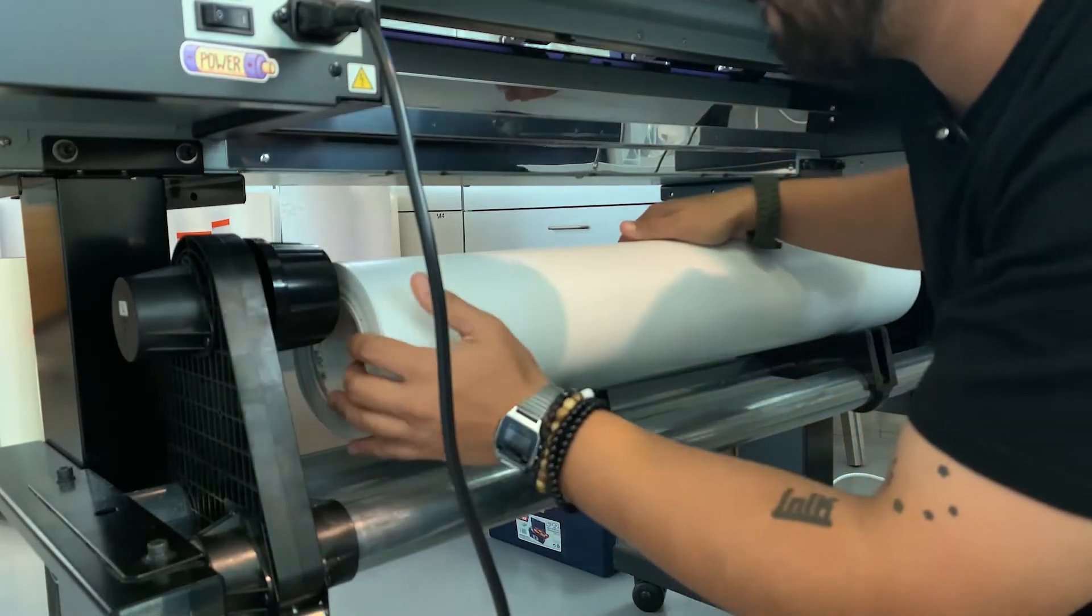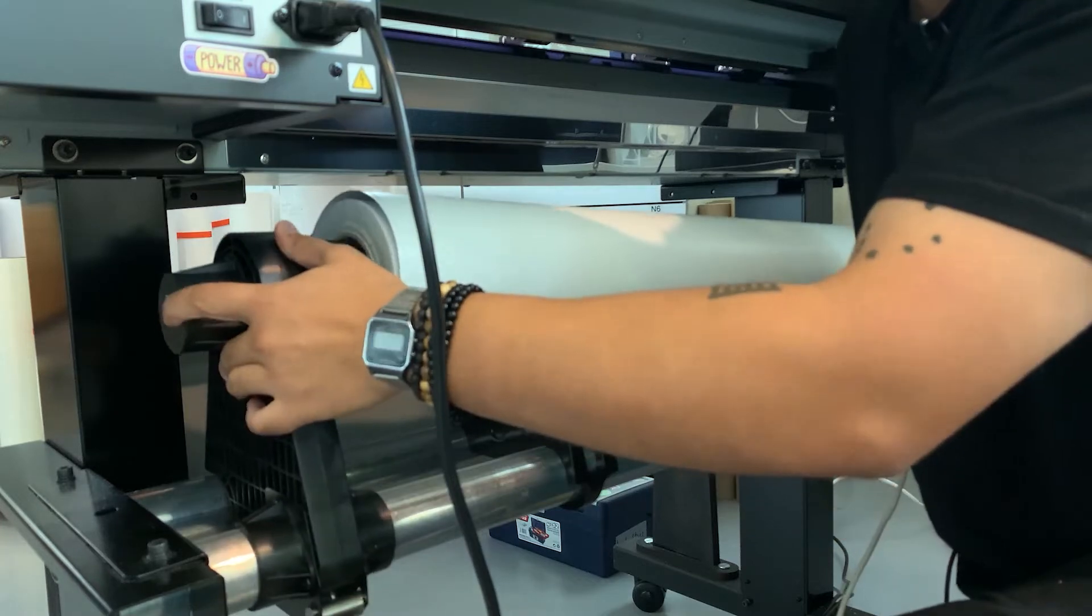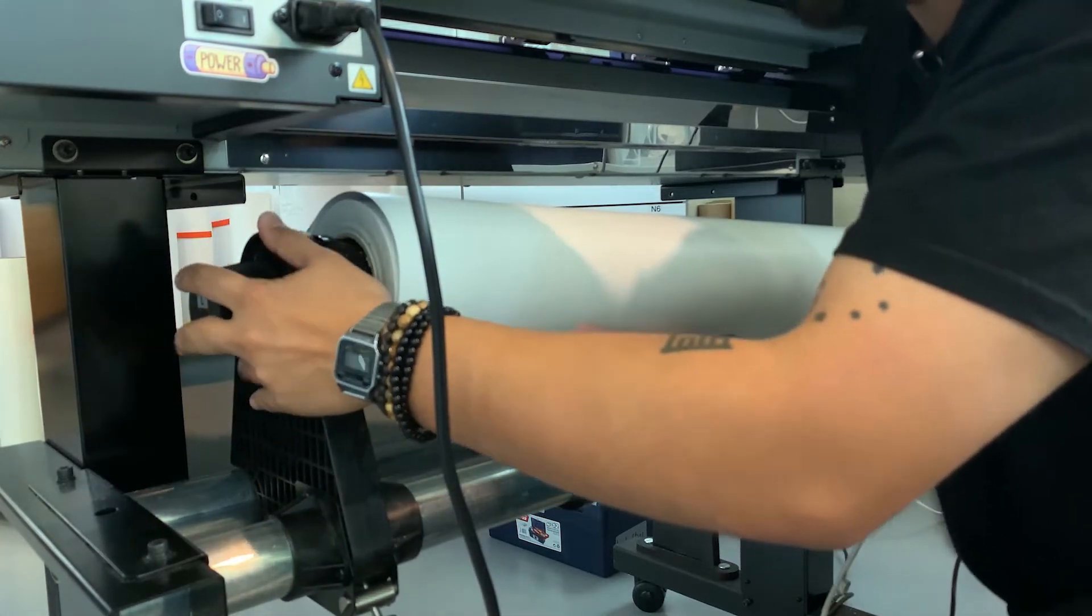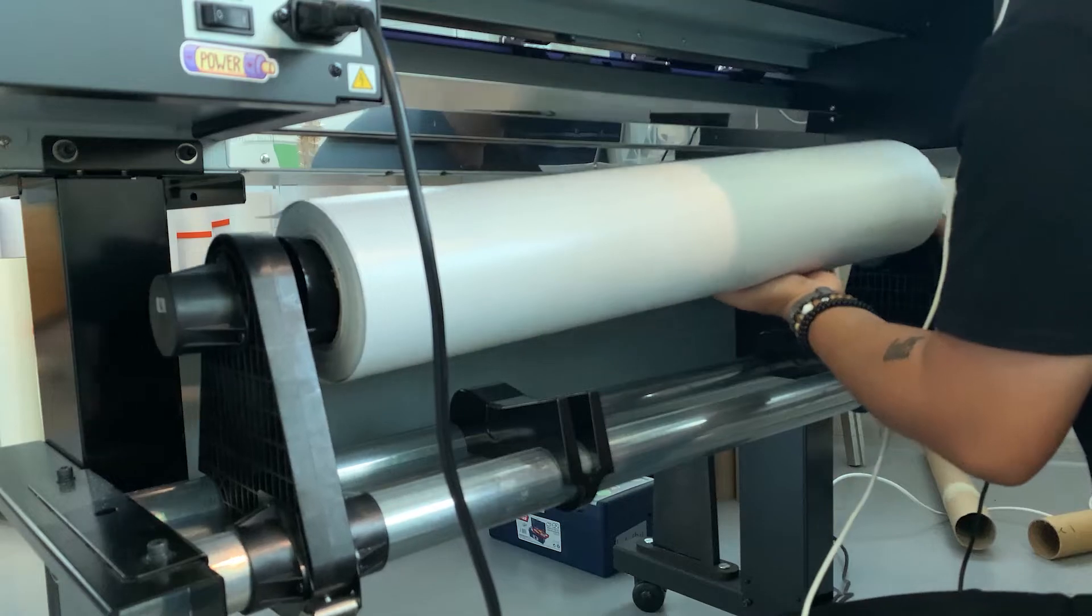We will then place our new vinyl on the roll of the spools, locking it in by bringing the two spools together. Make sure that the edge of the vinyl is rolling over the roll, not under.